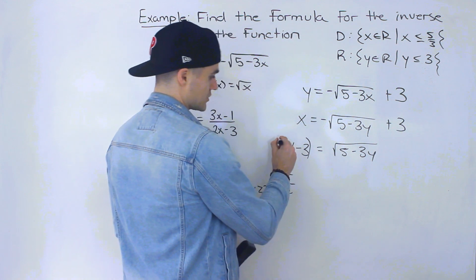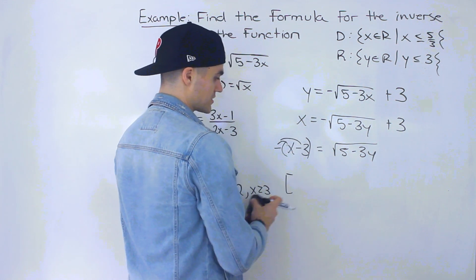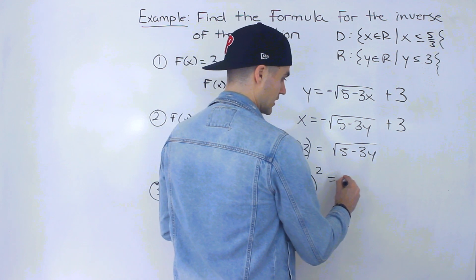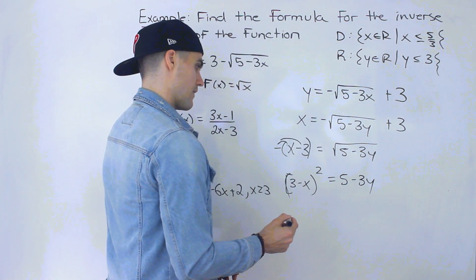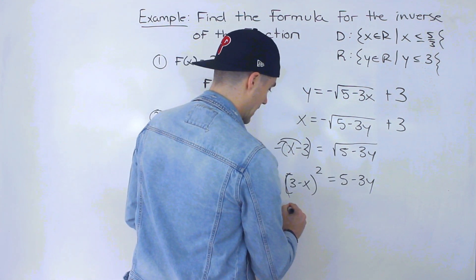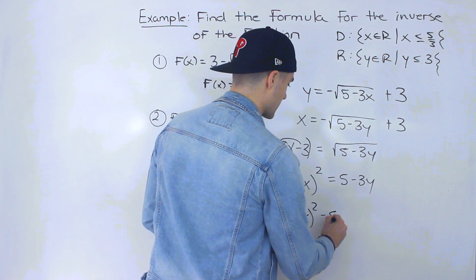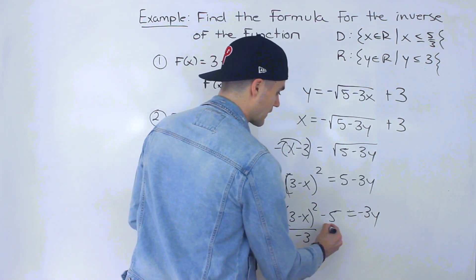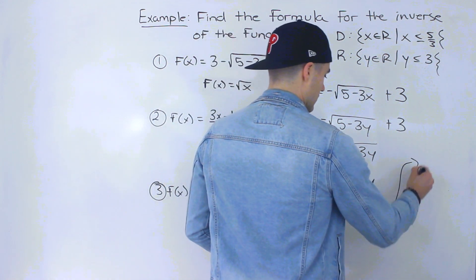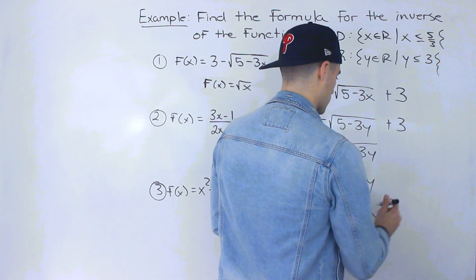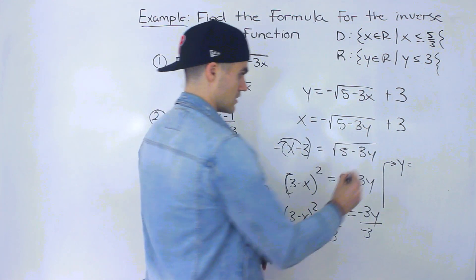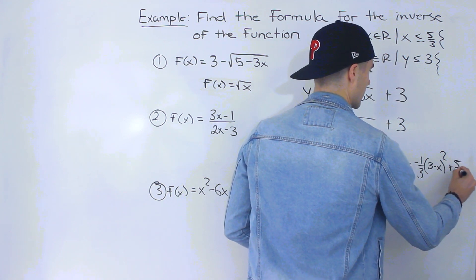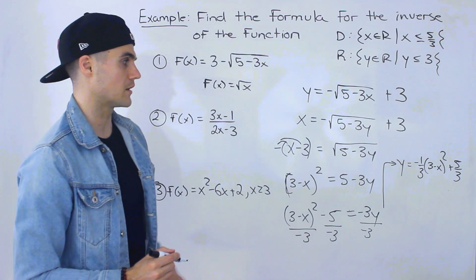Now square both sides to eliminate the square root: (3-x)² = 5-3y. Bring the 5 over: (3-x)² - 5 = -3y. Divide everything by -3. So y = -1/3 · (3-x)² + 5/3. That's the formula for the inverse.